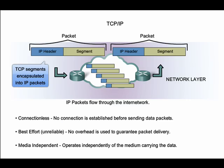IPv4 is currently the most widely used version of IP. IPv6 is being implemented in some areas and will operate alongside IPv4, and eventually it will replace it. IP was designed as a protocol with low overhead. It provides only the functions that are necessary to deliver a packet from a source to a destination over an interconnected system of networks. There are three main characteristics of IP protocol.